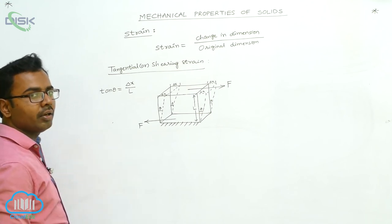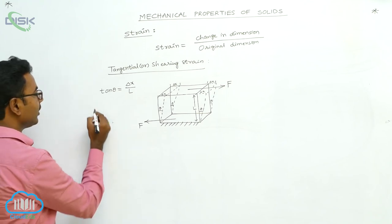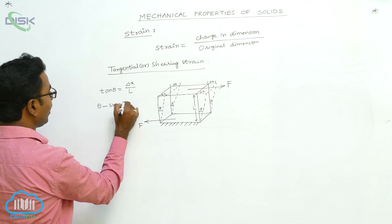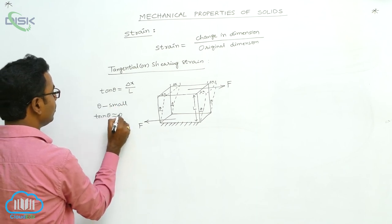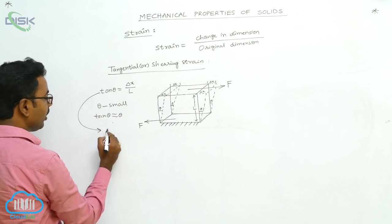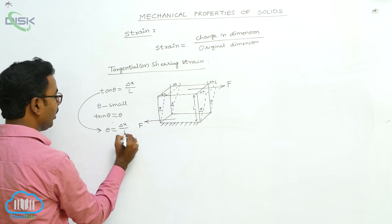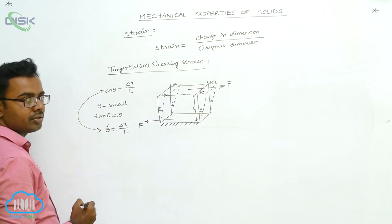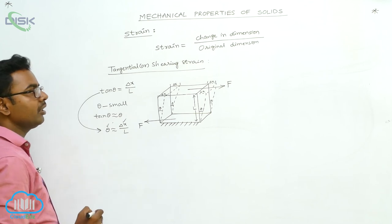The top surface is turned by a very small angle. For very small angles, tan(theta) is approximately equal to theta. Therefore, theta is approximately equal to Delta X divided by L. Here, theta is the tangential strain, and Delta X / L is also the tangential or shearing strain.